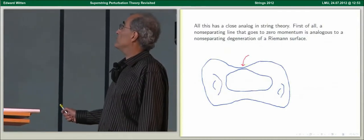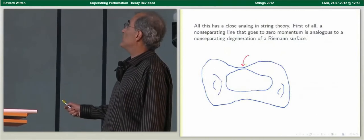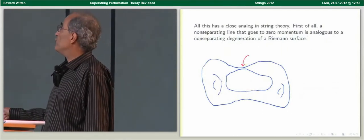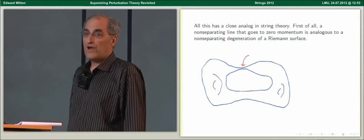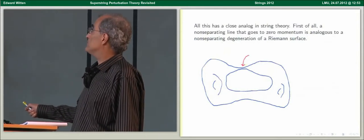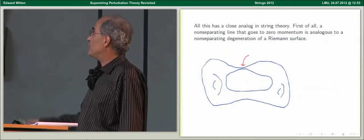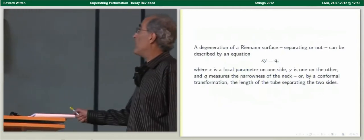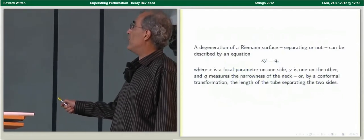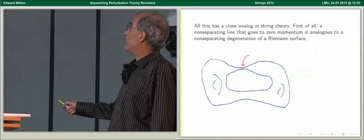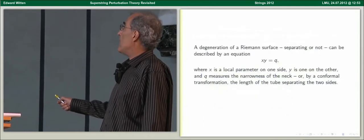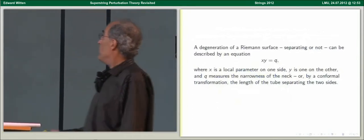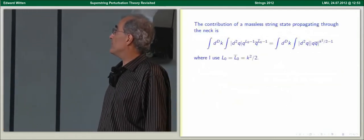Everything I've said has a close analog in string theory. A non-separating line going to zero momentum is analogous to a non-separating divergence of a Riemann surface, where a tube in a Riemann surface is getting pinched and becomes very narrow — or conformally, that's equivalent to saying it becomes very long — but in such a way that the whole surface doesn't divide in two. Mathematically, you can describe this by an equation xy = q, where x is the local complex parameter on one side, y is the local parameter on the other side, and q goes to zero in the limit that the neck becomes very narrow. By a conformal transformation, log q is the length of the tube separating the two sides.